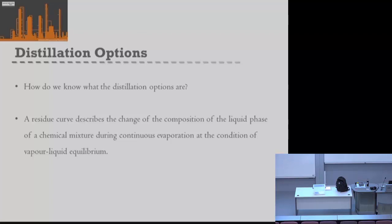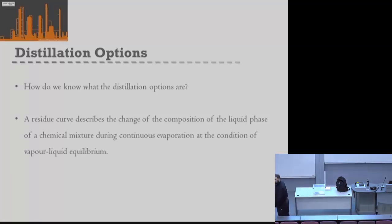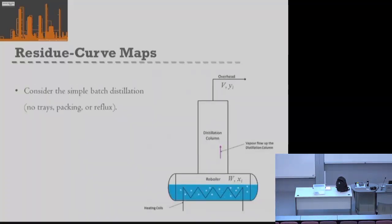Our residue curve describes the change of the composition of a liquid phase of our mixture during a continuous evaporation. Think back to a couple of weeks ago — we've got a mixture that's continuously evaporated. It's a batch distillation. Our residue curve comes from thinking about a very simple batch distillation system — no trays, no packing, no reflux.